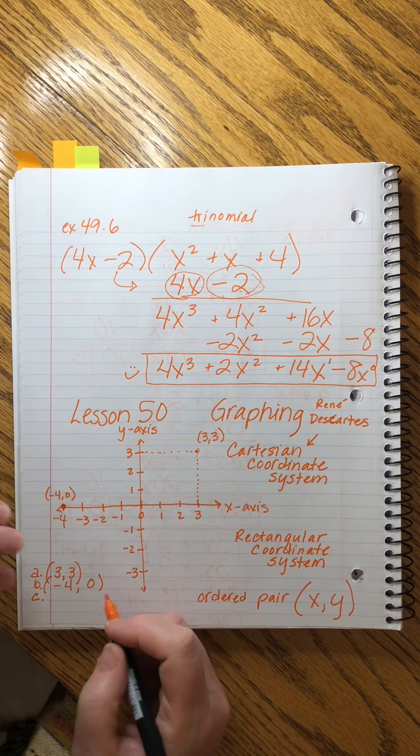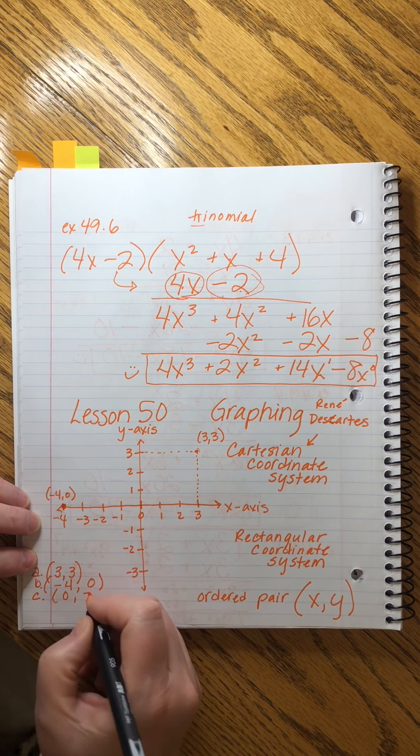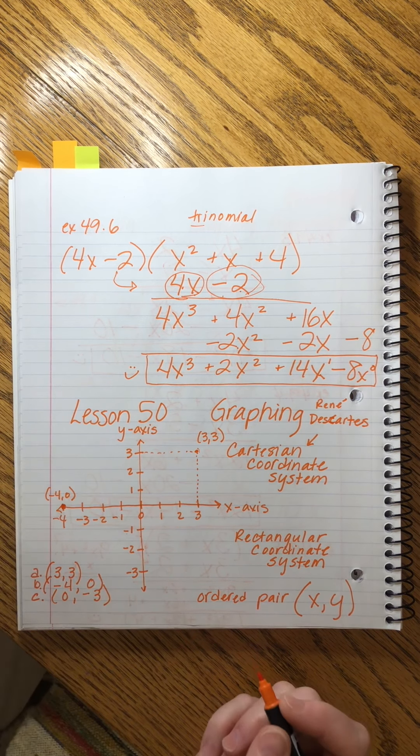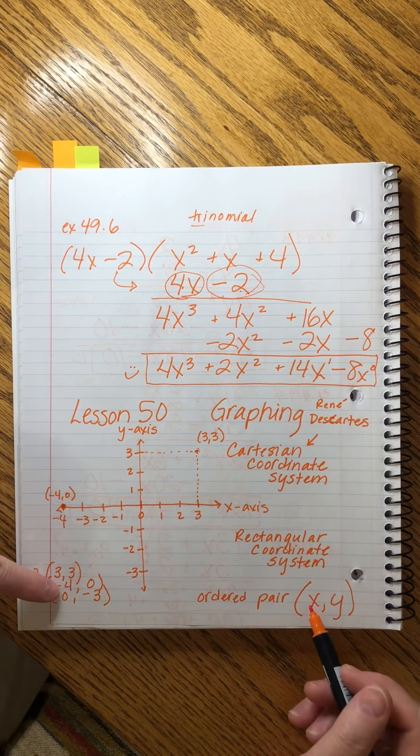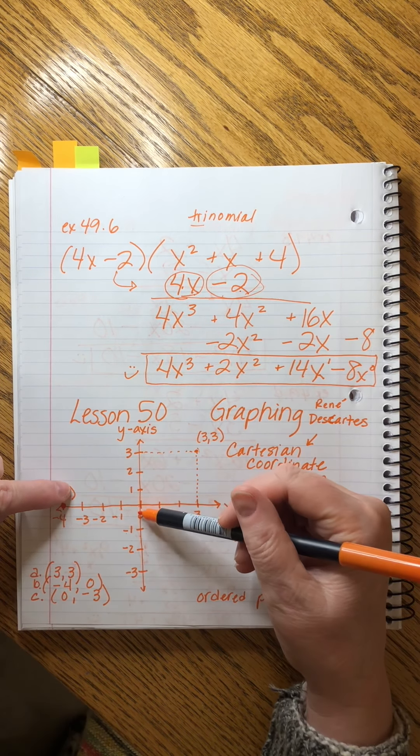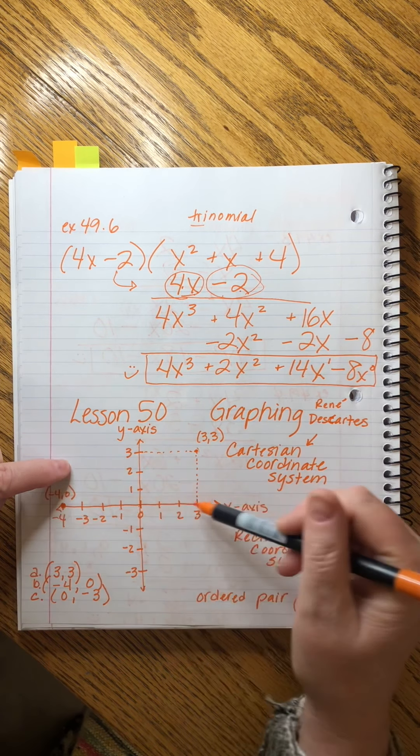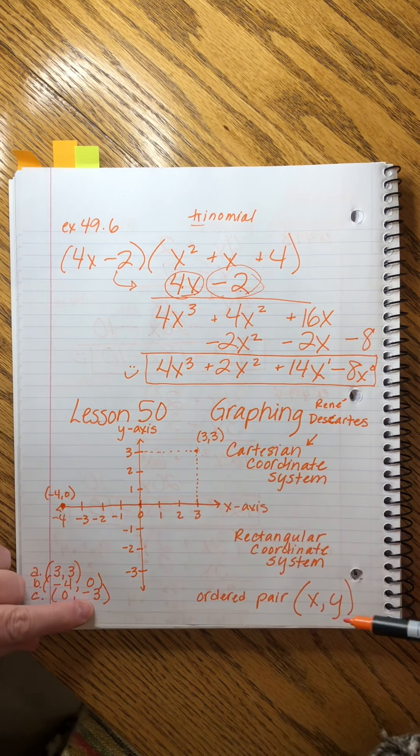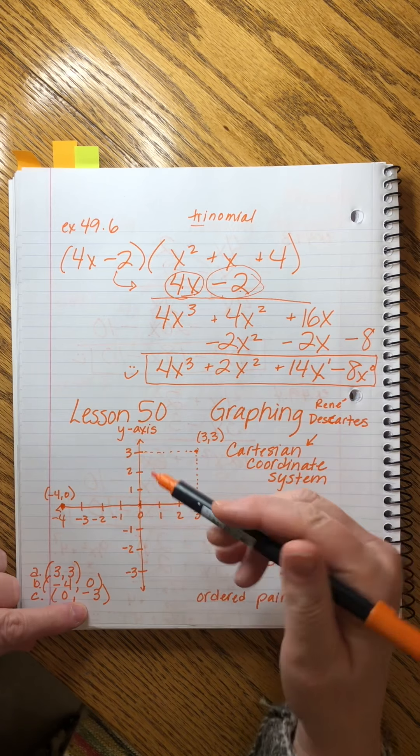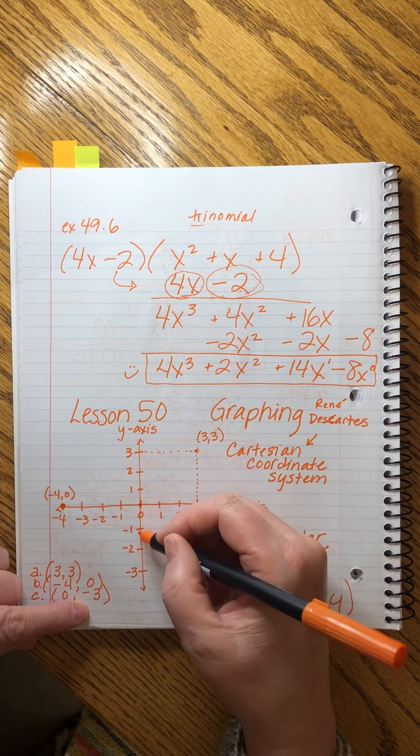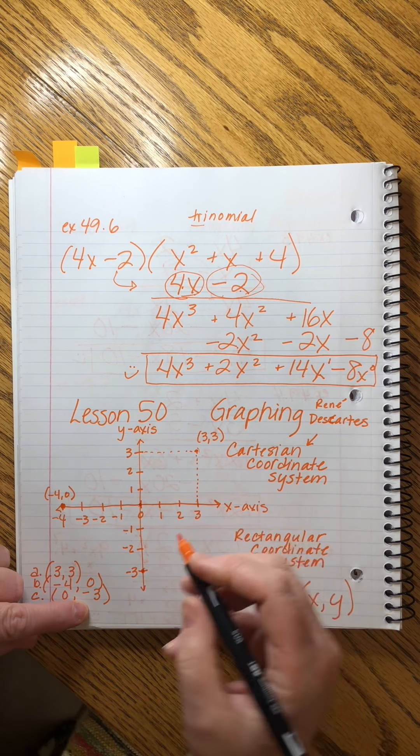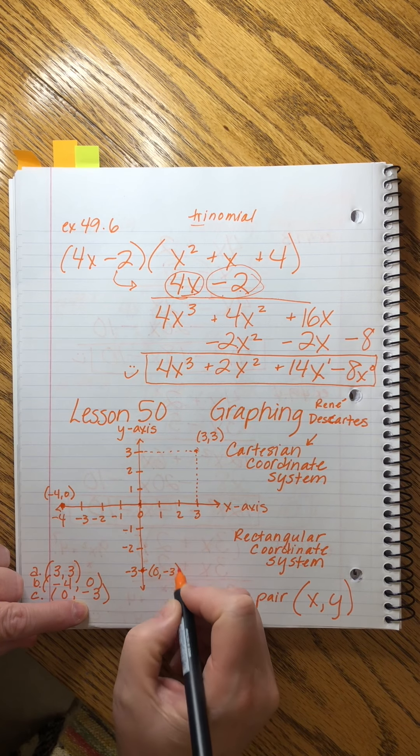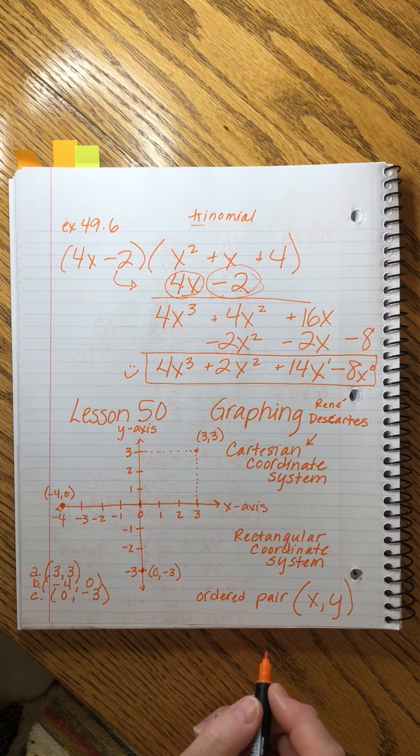C is (0, -3). So this time 0 is the x-value, and 0 is right here. It's the x, so it's here, side to side, and now we want to look at the y-value. That's the up and down. That's negative 3. So we go from here down, and here's the point (0, -3). Okay, that looks pretty good.